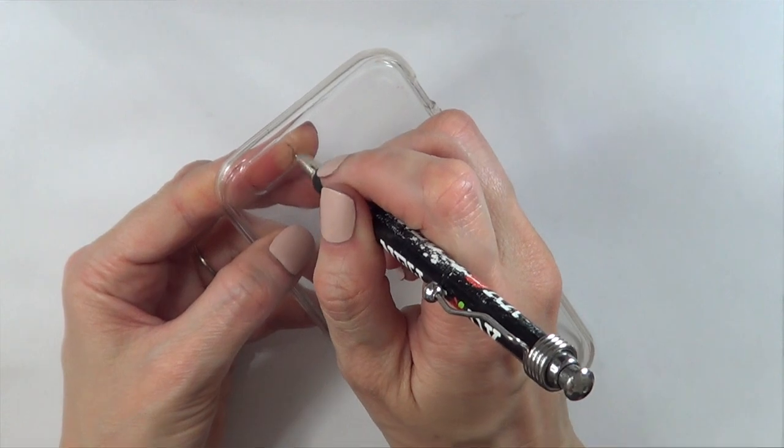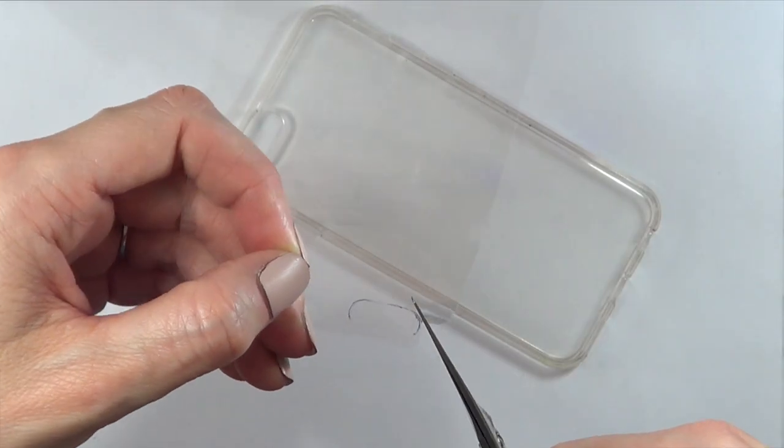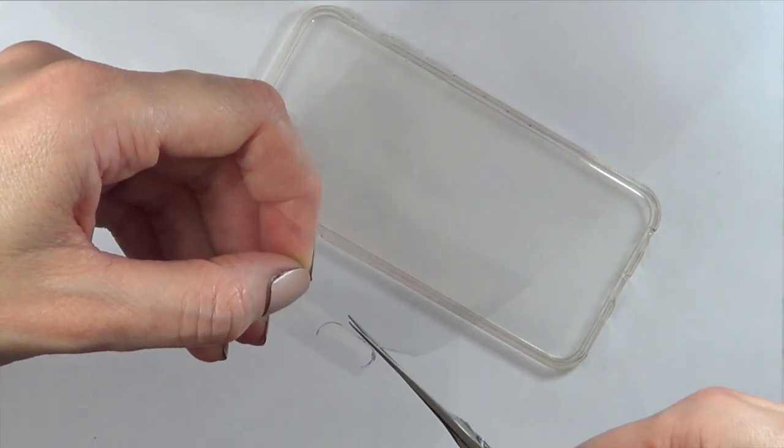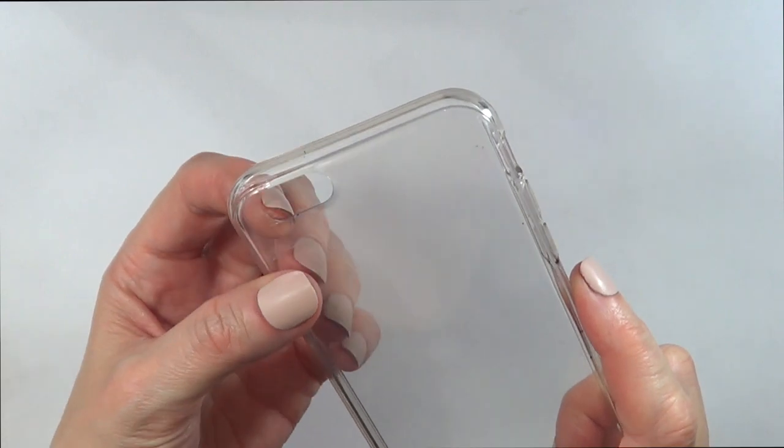And then once I cut it, I'm going to be cutting the part where the camera goes because I want to be able to use the camera as normal. So I'm just going to be cutting that bit. And this is what it looks like.